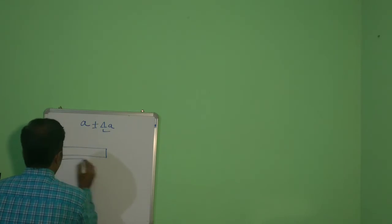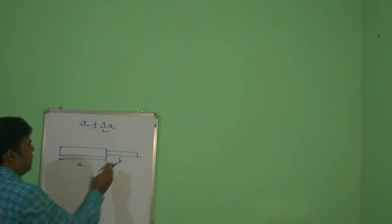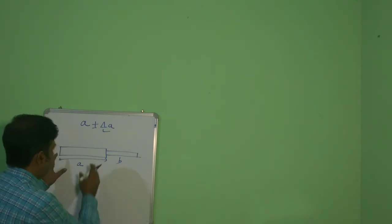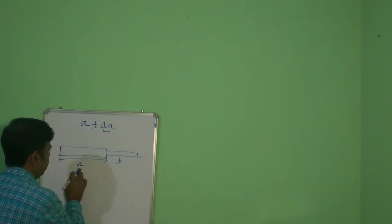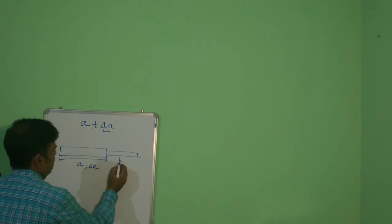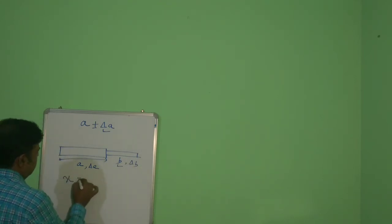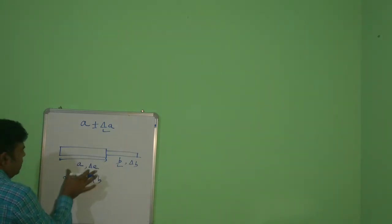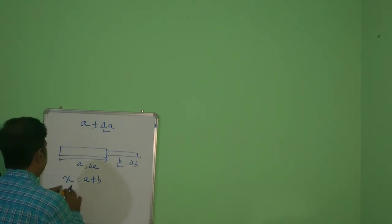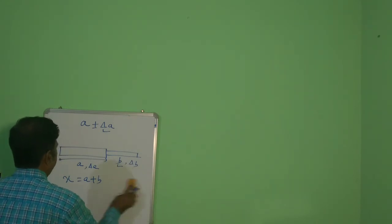Suppose there are two rods. Rod 1 has a measured length A, and the second rod has a measured length B. When we measure something, there will always be error. Suppose while measuring rod 1, the true value is A and the error is delta A. While measuring rod 2, the true value is B and the error is delta B. Let X equal A plus B — when those measured values are added, the resultant quantity is X. Then what will be the error in this resultant quantity?